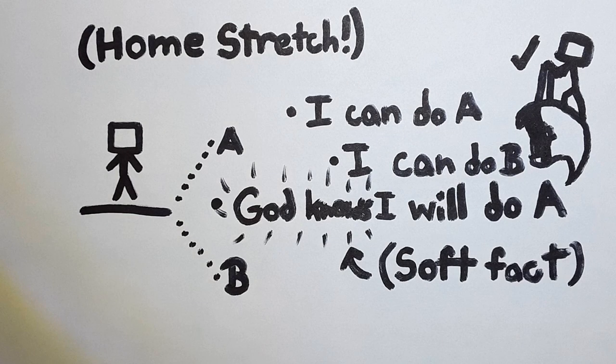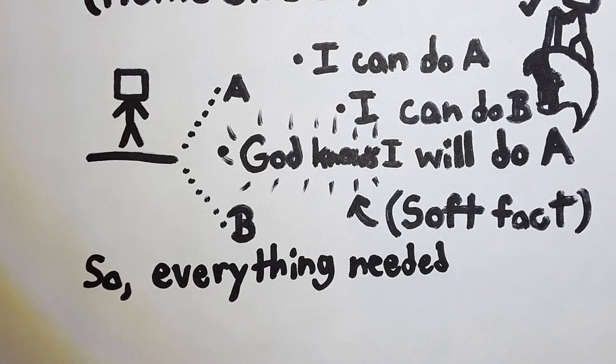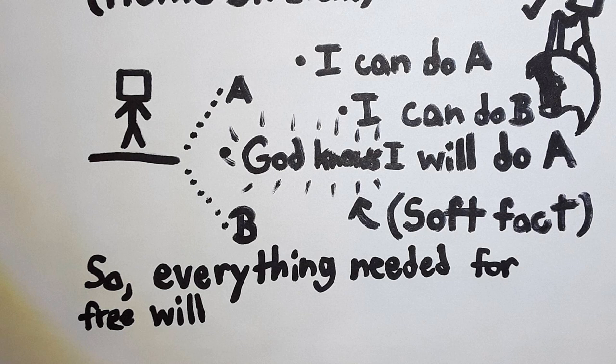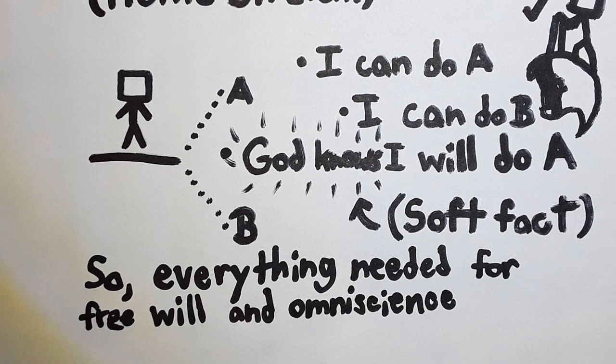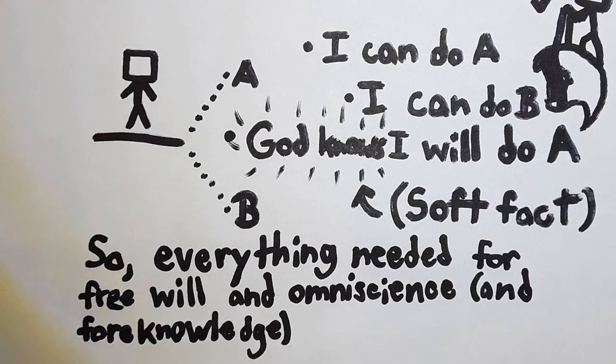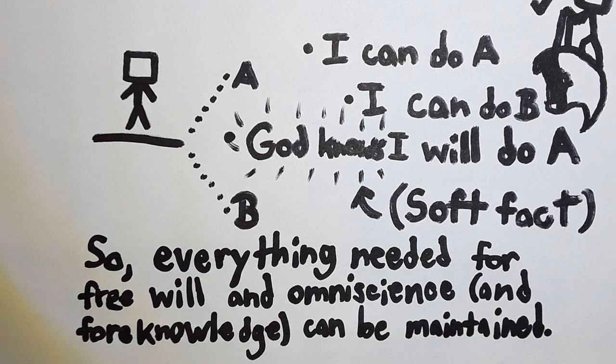This is because God's knowledge of the future would be a soft fact, not influencing what I have the ability to do. So, we could hold on to simultaneously everything needed for free will and everything needed for omniscience, specifically foreknowledge. So, this shows that the concepts are all philosophically consistent.